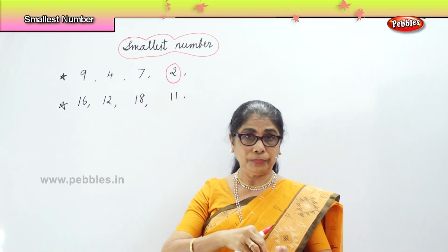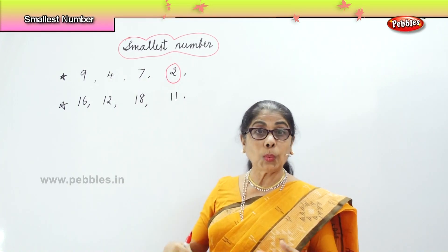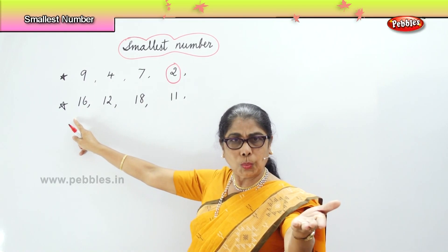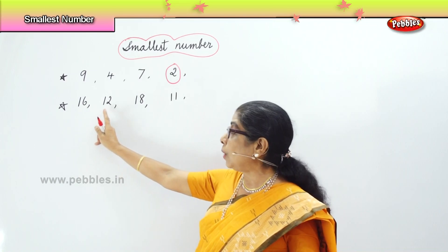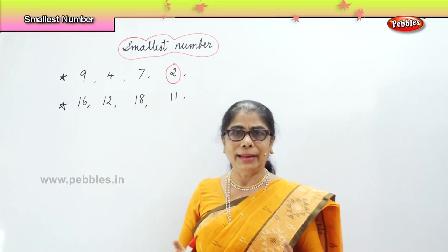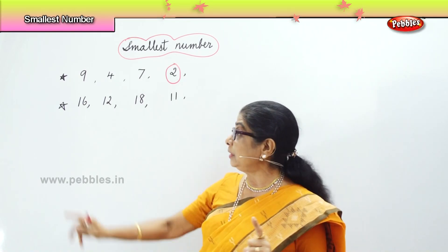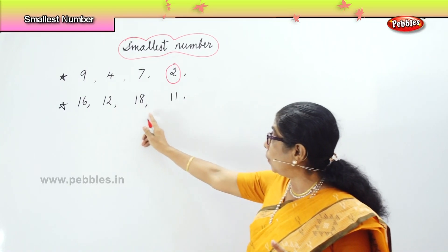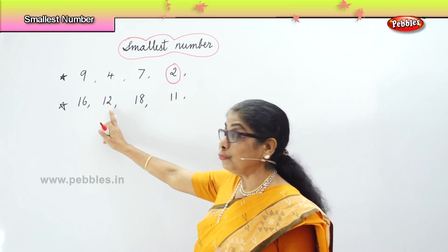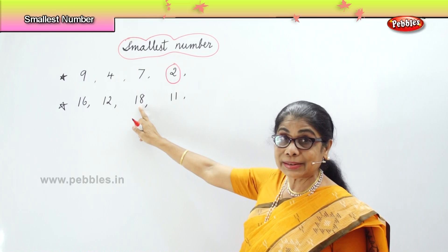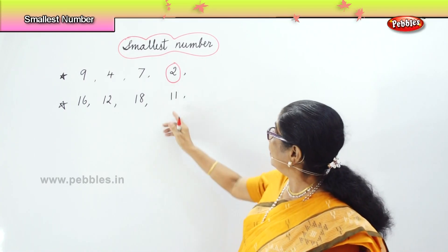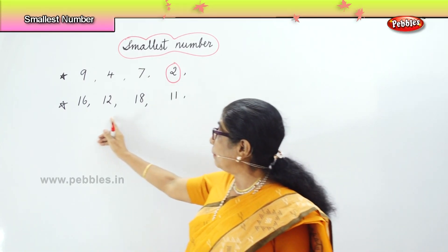Four of you have beads to count: 16, 12, 18, and 11. What is 16? Count and see — 10 plus 6, that is 1 and 6. Then 1 and 2. Then 1 and 8. Then 1 and 1. Now, we are looking at double digits. The first numbers are all 1. Look at the second number: you have 6, 2, 8, and 1. So, which is the smallest number? 11.